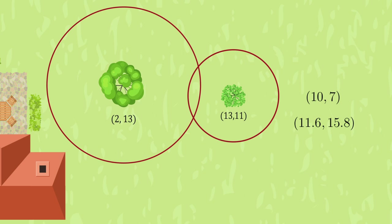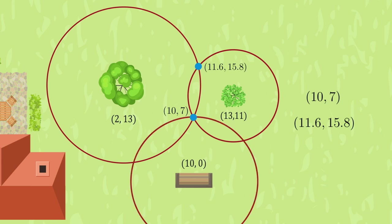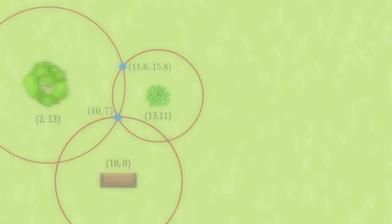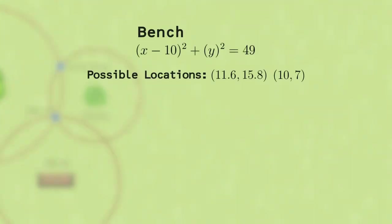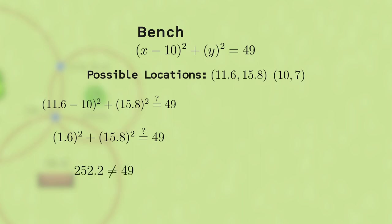So we've gone from knowing we were somewhere on the circle to knowing we were at one of two points. In other words, if the robot sees two landmarks, it can compute two possible positions it may be in. We need the third landmark to determine which one is the actual robot position. Let's say the third landmark is the bench, located at (10, 0), and the sensor tells us it is 7 meters away. We can simply substitute in both numbers to see which one works. If we substitute in (11.6, 15.8), we would see that we get 252.2, which does not equal 49. Therefore, our robot can't be at that location. Let's try the other possible position. If we use (10, 7), we find that we get 49 just as we wanted. And therefore, that is the robot's actual position.